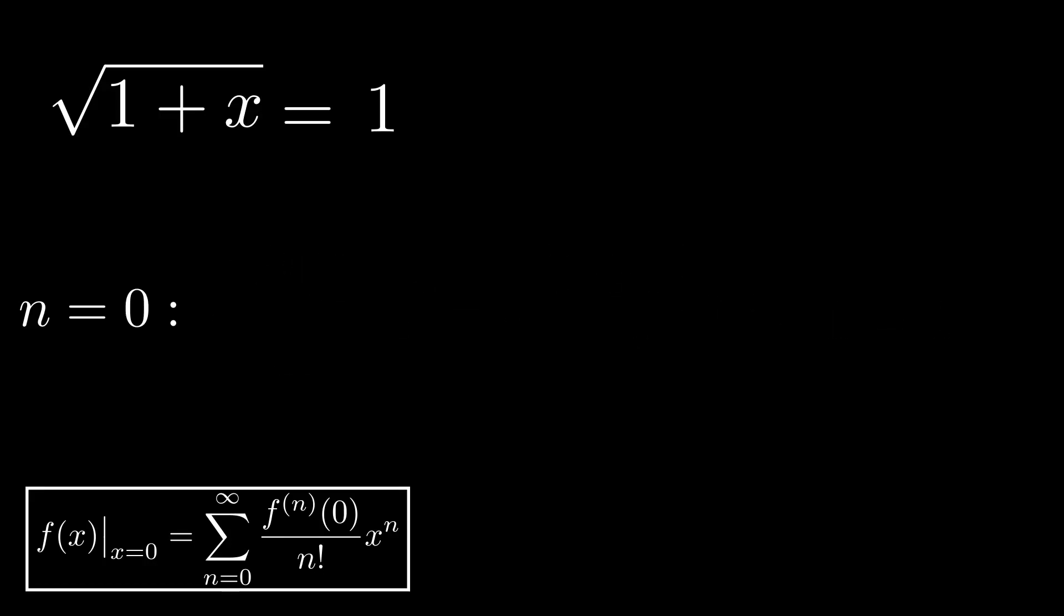Next up is our second term, for which n is equal to 1. Again, we start from the general formula and fill in n is equal to 1. This time, we have f superscript 1 in the numerator. This is shorthand notation for the first derivative. We can easily calculate the derivative of the square root of 1 plus x. This is 1 half multiplied by 1 plus x to the power of minus 1 half.